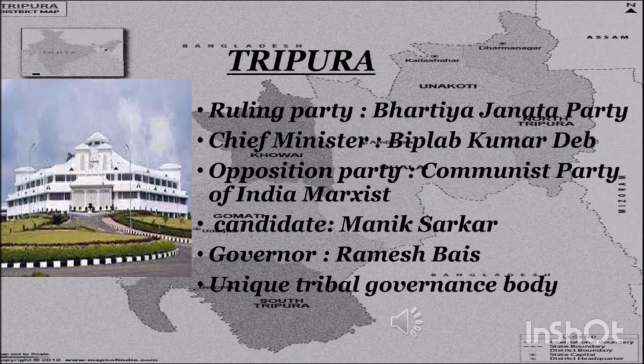Tripura: The party currently ruling in Tripura is BJP and the Chief Minister is Biplab Kumar Deb. The opposition party is CPIM with candidate Manik Saha. The Governor of Tripura is Ramesh Bais. Tripura has unique tribal governance only. Tripura has been divided into eight districts. Tripura sends two representatives to the Lok Sabha and one to the Rajya Sabha. The state has 60 assembly constituencies.